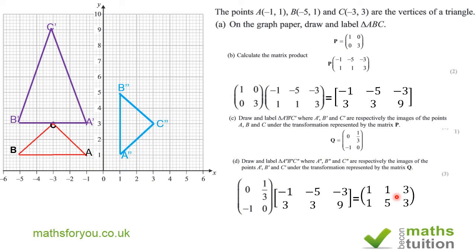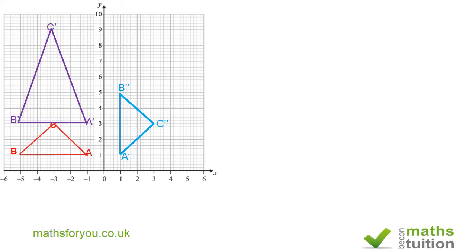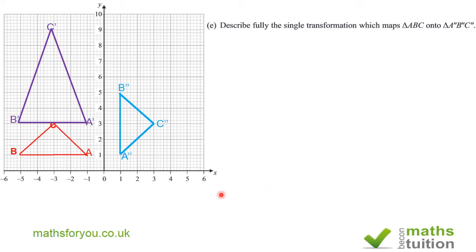So we now draw triangle A''B''C'': A'' is at (1,1), B'' is joined, and C'' is at (3,3), joining to B'' and A''. For part e it says describe fully the single transformation which maps triangle ABC onto triangle A''B''C'' — in other words, we're trying to explain how we got from the original triangle to the final triangle.